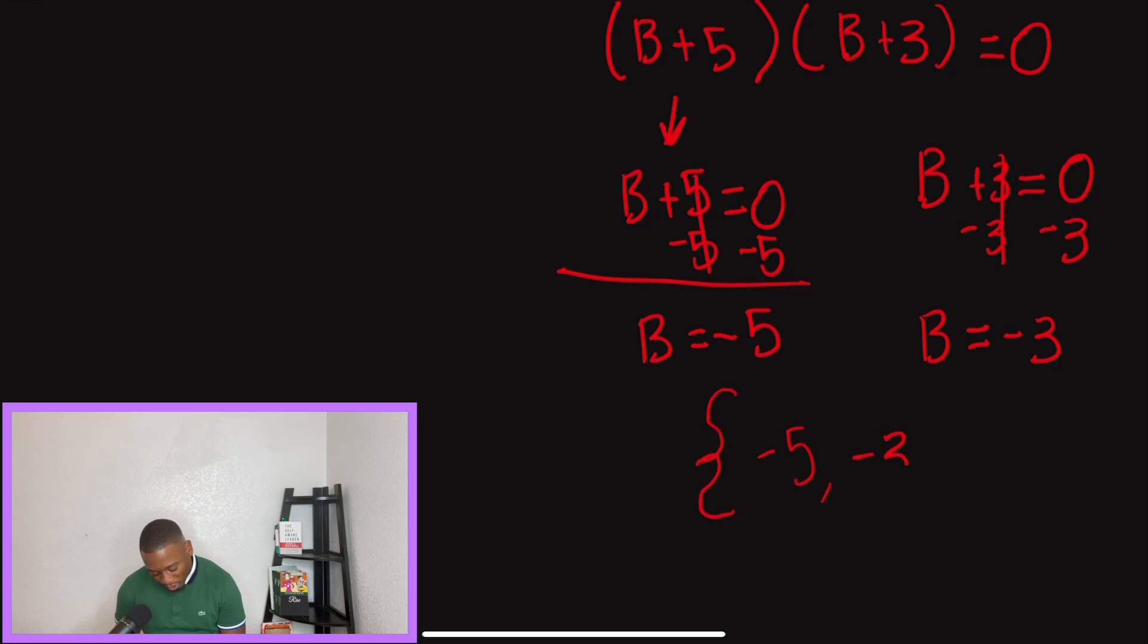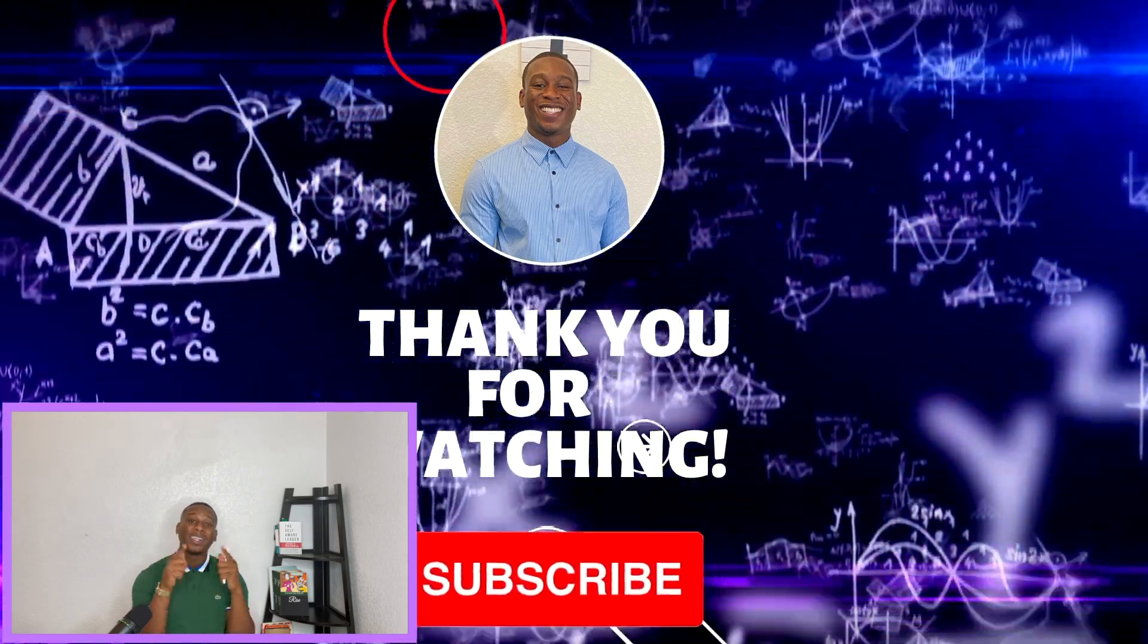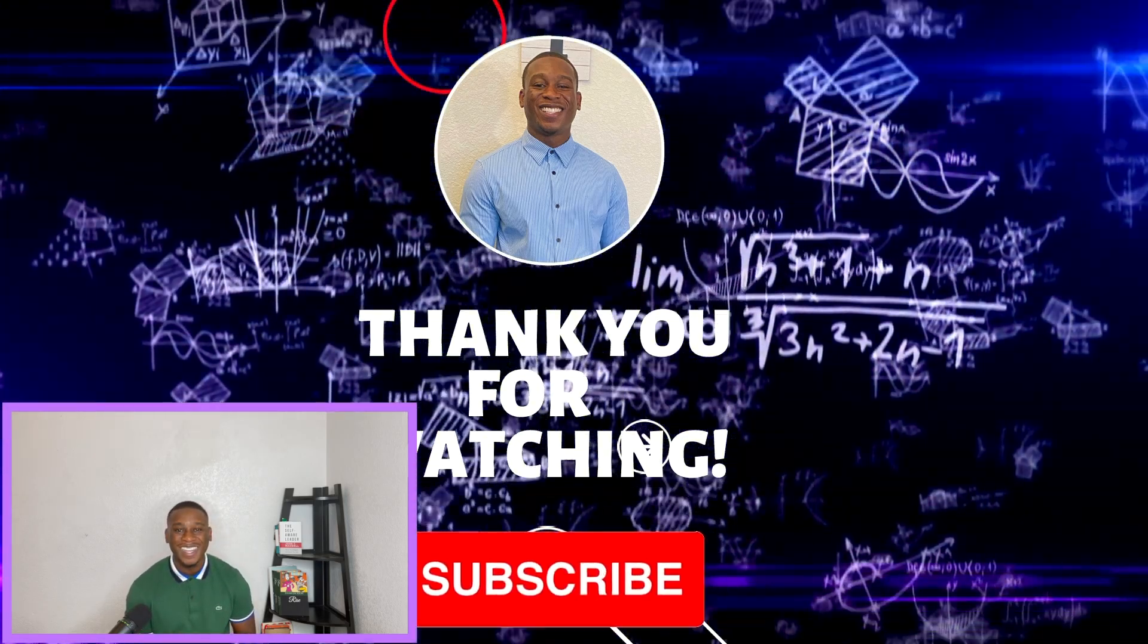So when we're talking about zero product property, guys, understand it's an extension of factoring. So if you have an equation that's set equal to zero, first thing you must do is factor it. After you factor it, make sure you set those factors equal to zero and then solve for the variable. Hope you guys found this video helpful. This is Algewin with Mr. Peters. We are talking about the zero product property. Thank you guys so much for joining us today.